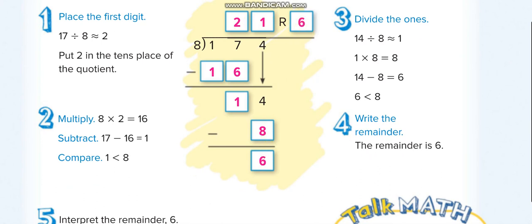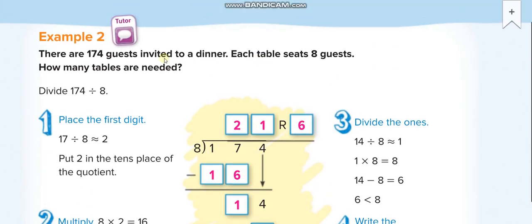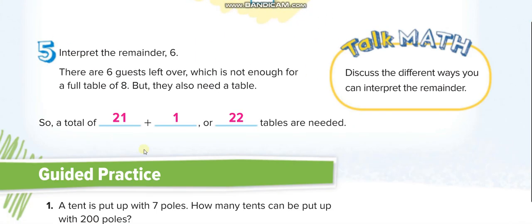The remaining 6 guests. So the guests are human, they're important. So we can't tell them to go back. What we will do, we will arrange another table for them. According to the importance of the questions, we interpret the remainder. So instead of 21 tables, we'll bring 22 tables. Why? For the remaining 6 guests. So here it is, 21 plus 1, 22.